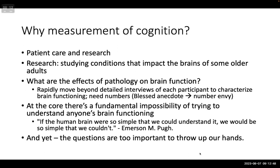There are two areas I think about with why we measure cognition: patient care and research, especially research initially. We're studying conditions that impact the brains of older people, and the overarching question is: what are the effects of pathology on brain function? We rapidly move beyond detailed interviews to needing numbers. That brings us to the Blessed, Tomlinson, and Roth papers from the 1960s in the UK, which really brought Alzheimer's disease back onto the research radar, establishing the relationship between tangle pathology and cognitive problems.